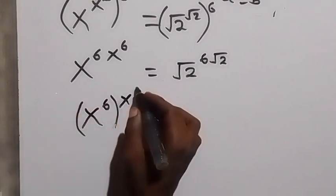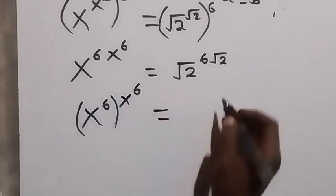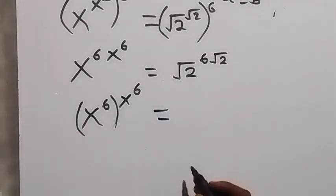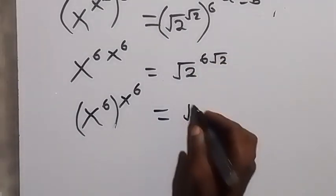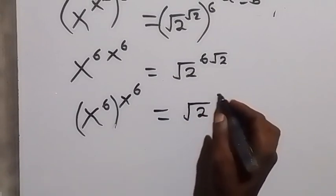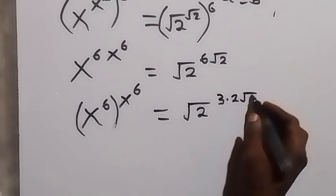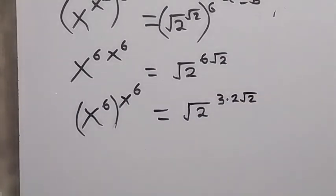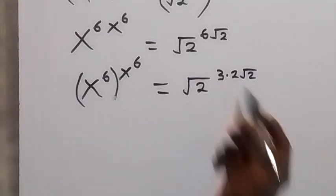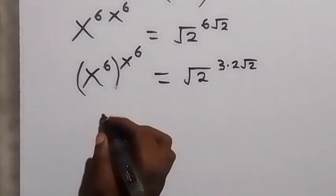On the right side, we can separate this 6 as 3 times 2. So we have root 2 raised to power 3 times 2, then square root of 2. This 6 here is the same thing as 3 times 2, and from here we can separate this further.